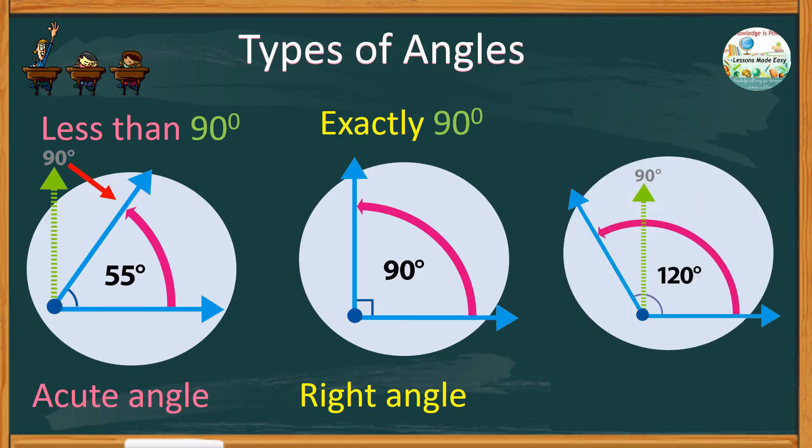On the other hand, if one side of the angle bends outwards, making the corner more than 90 degrees, but less than 180 degrees, this type of angle is called an obtuse angle.